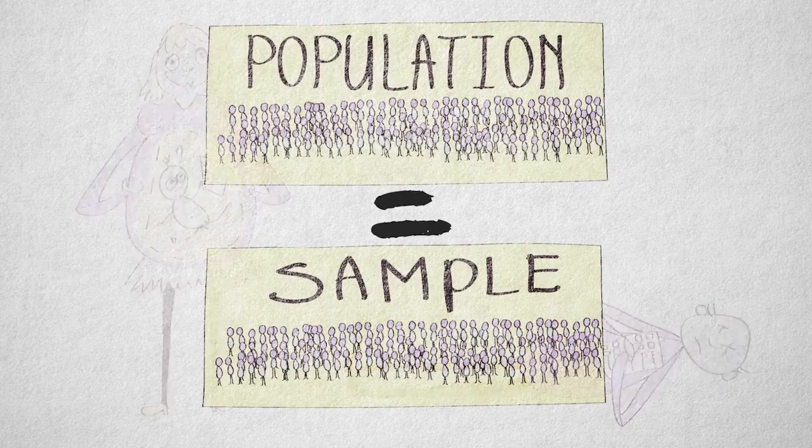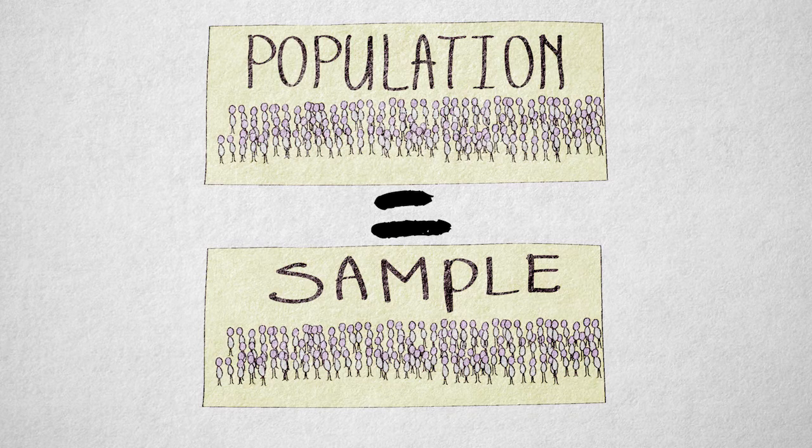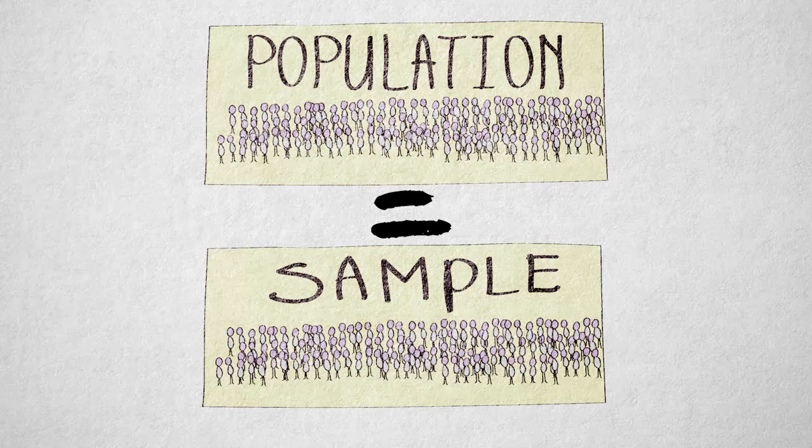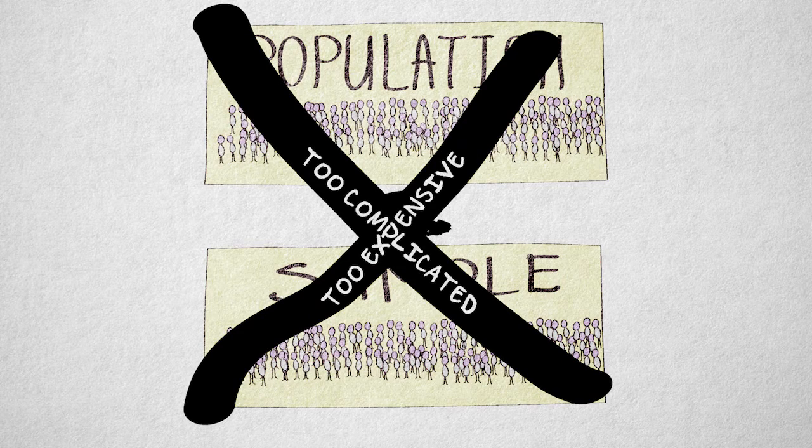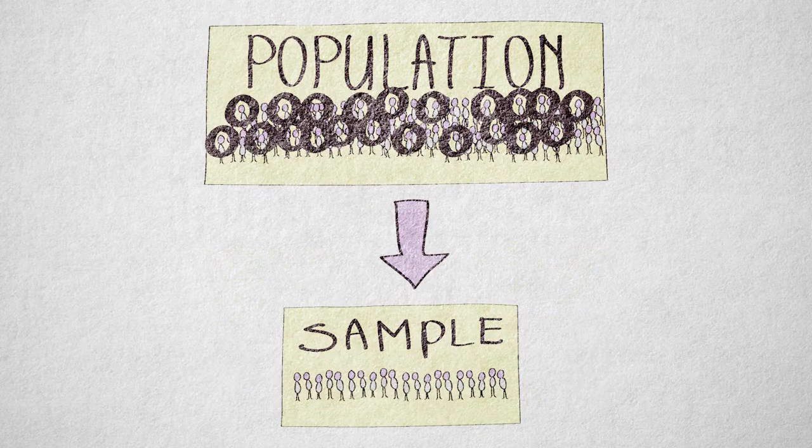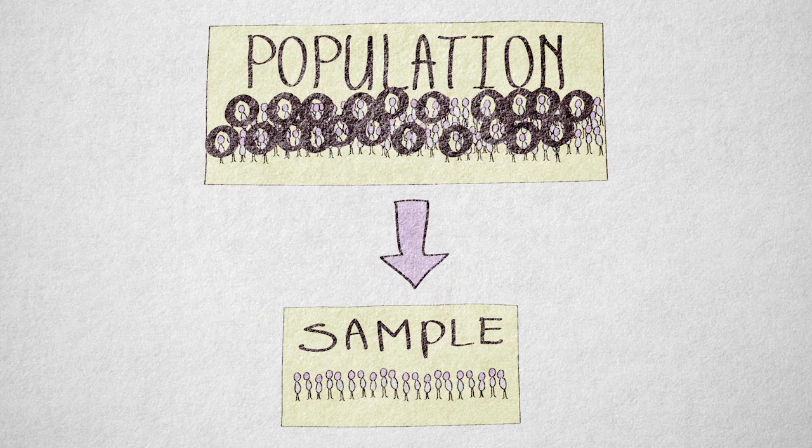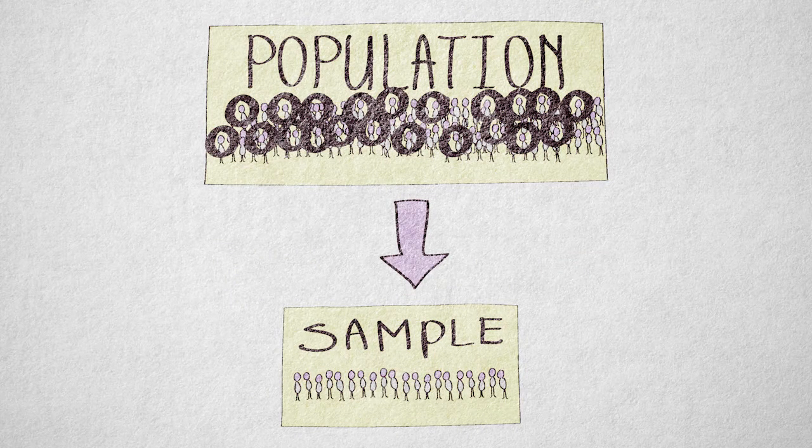Even if the target population is smaller and well defined, it's almost always too complicated and too expensive to include the entire population in a study. This is why we take a sample, a subset of the population. The sample is used to represent or estimate a property of the population.